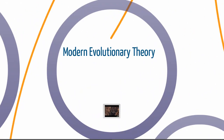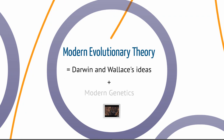Modern evolutionary theory is Darwin and Wallace's ideas plus modern genetics. As mentioned, Darwin and Wallace didn't know exactly what was passed on or how that worked, so what we'll be covering in modern evolutionary theory includes the genetic component as well as Darwin and Wallace's basic observations.